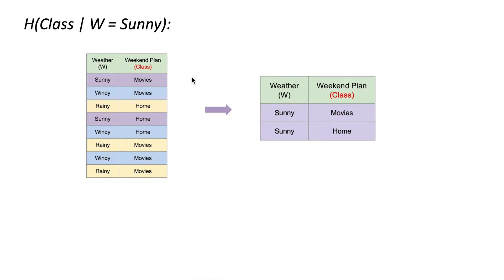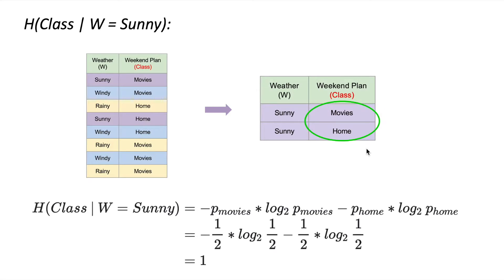For the first conditional entropy — the entropy of the class given weather equals sunny — we select the purple rows. Half of the values are movies and half are home, so it's one divided by two. We know from the previous videos that this is the maximum entropy situation: when we have binary classes with 50% in each class, the entropy equals one.